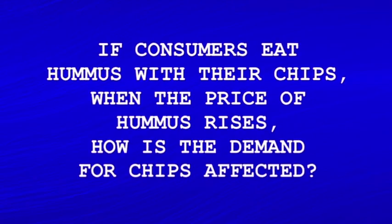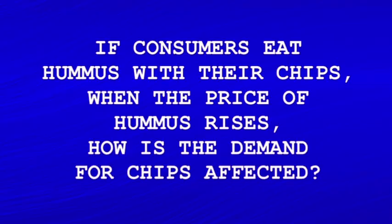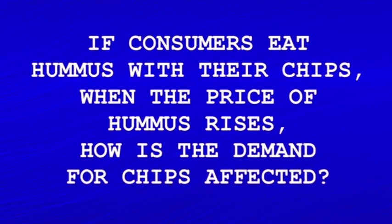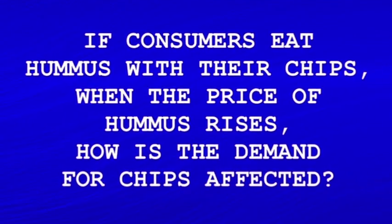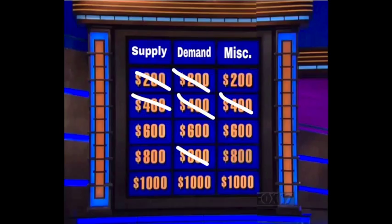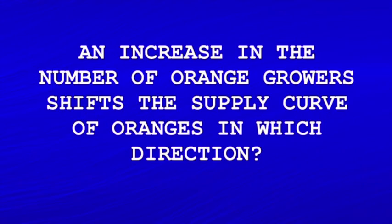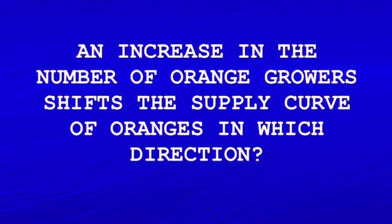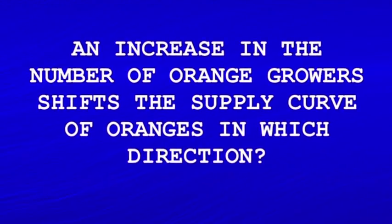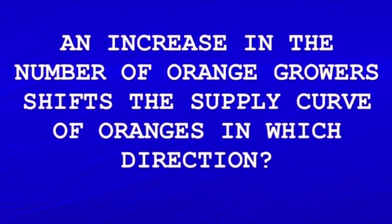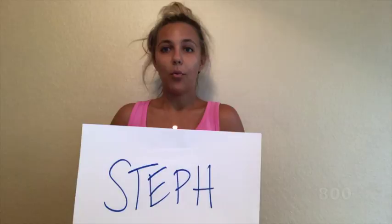Demand for 800. If consumers eat hummus with their chips, when the price of hummus rises, how is the demand for chips affected? What is a decrease in the demand for chips? That is correct. Supply for 600. The increase in the number of orange growers shifts the supply curve of oranges in which direction? What is rightward? That is correct.